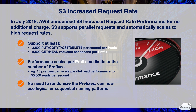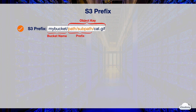With S3 increased request rate, we can let S3 scale horizontally by adding prefixes to objects. Here is an example: you have an S3 object called cat.gif stored in a bucket called mybucket. The path slash subpath slash is the prefix of the object, using slash as the delimiter. The object key is composed of the prefix and object name, which is path/subpath/cat.gif.